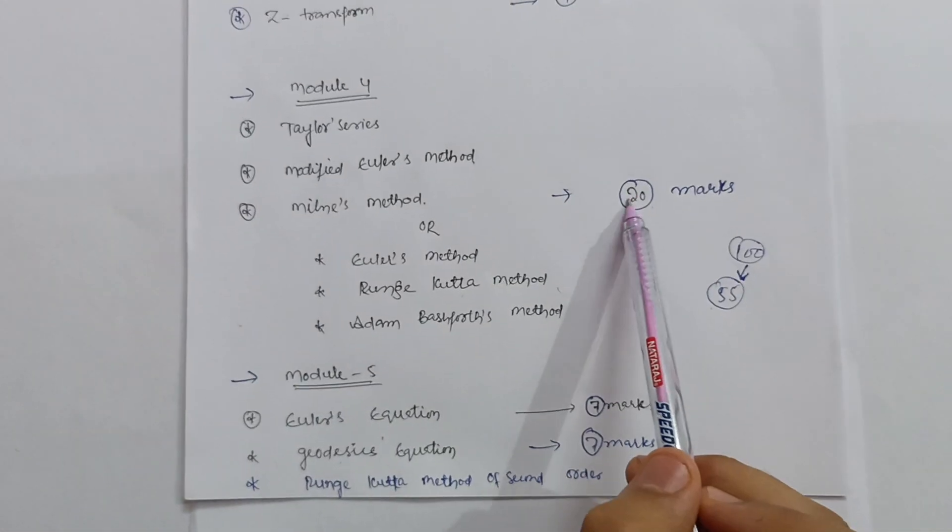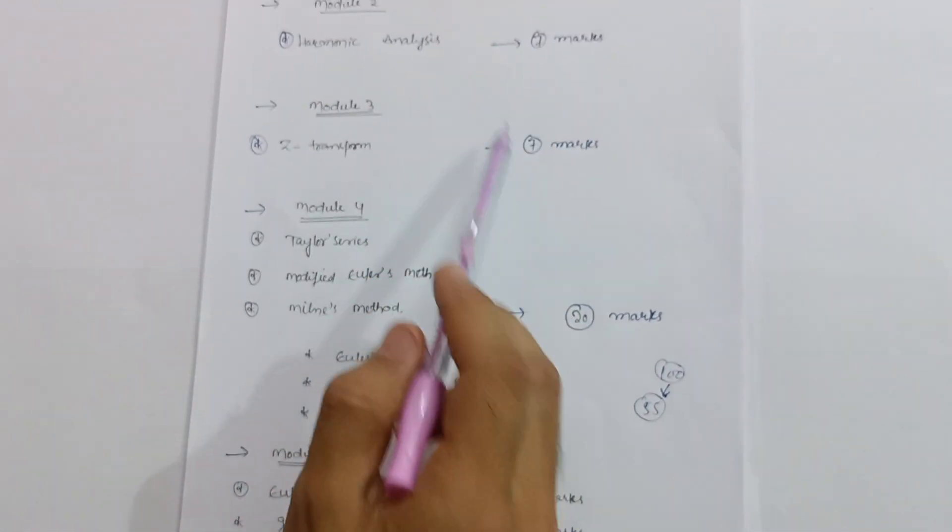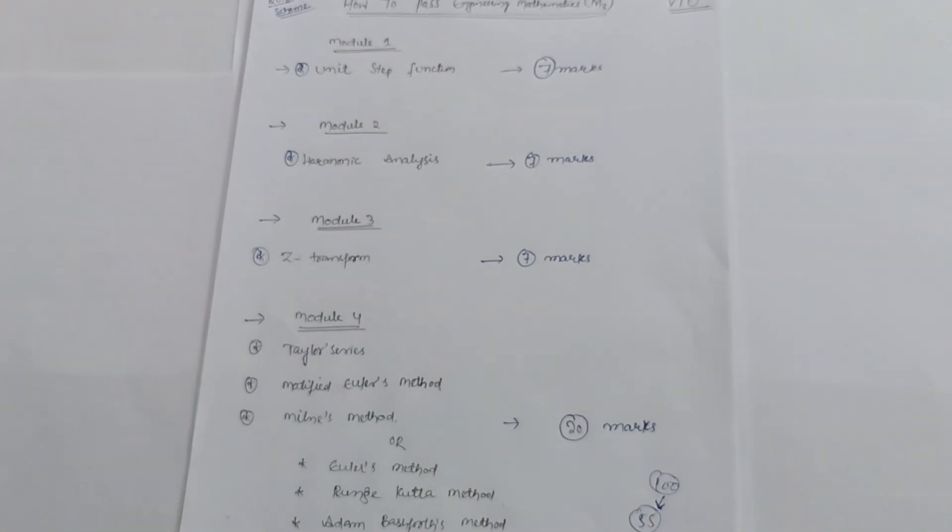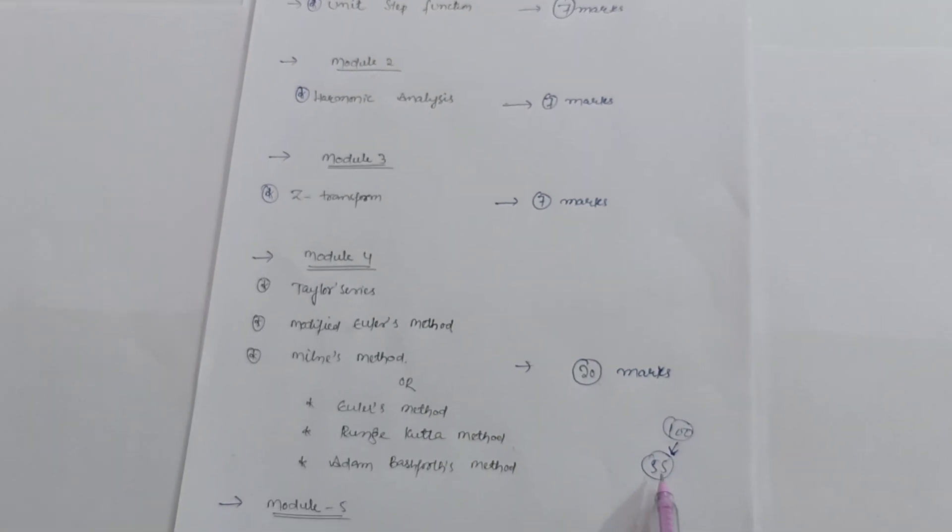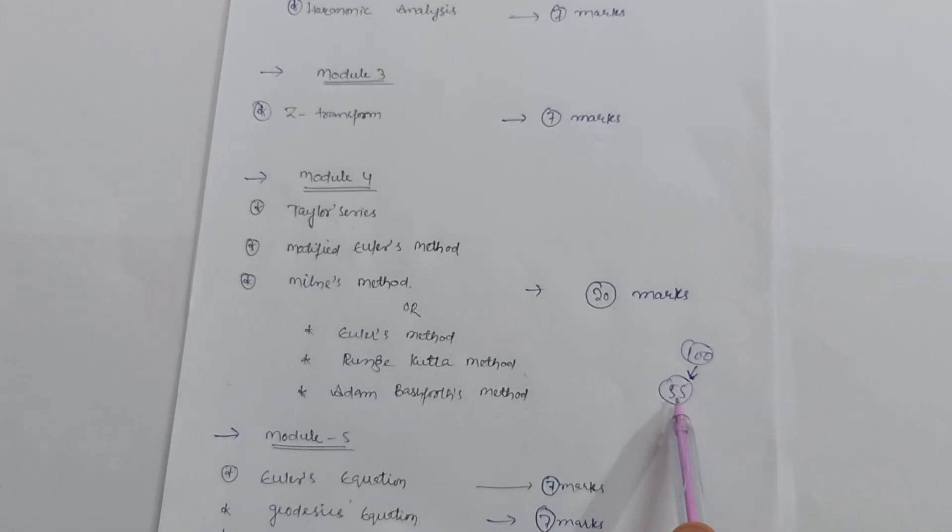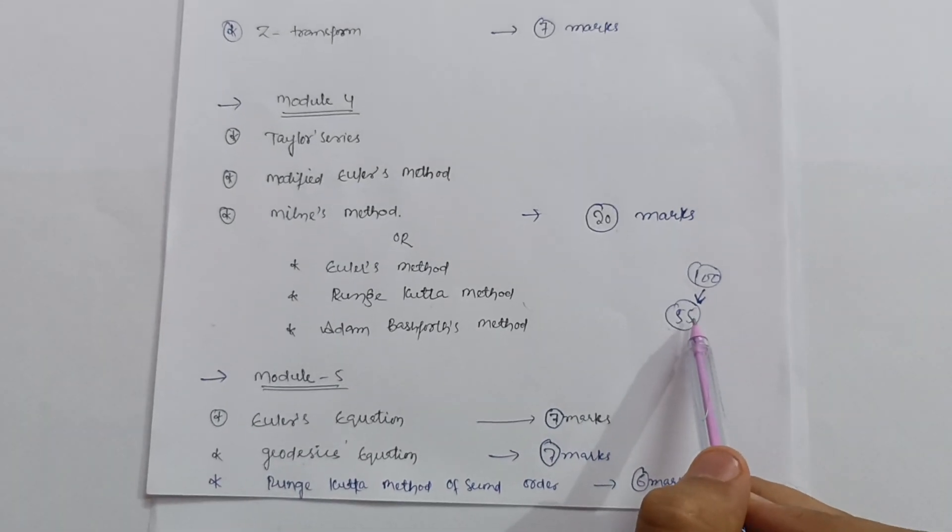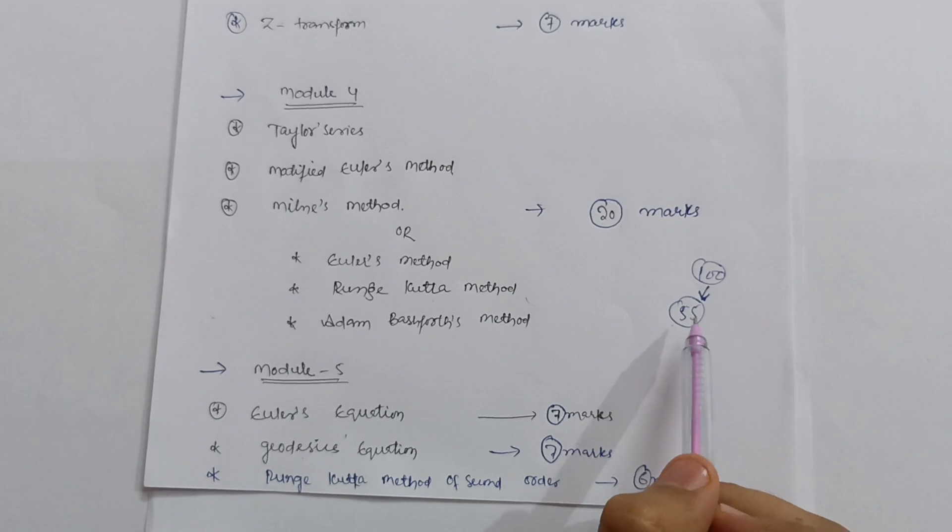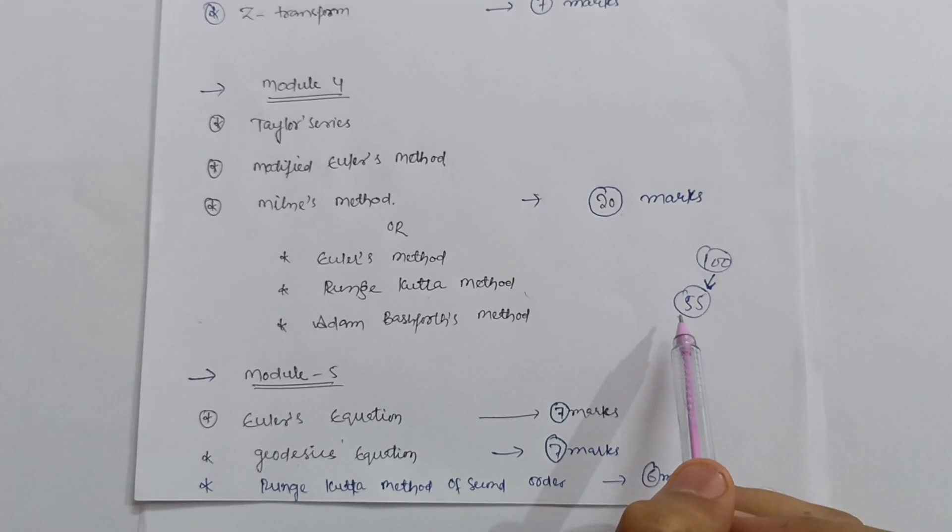41 plus these 14, it will carry 55. So out of 100 you can easily get 55 marks over here. So I hope guys, this video is beneficial for you people, especially if you are a backlog student and you are searching how to pass M3 subject.